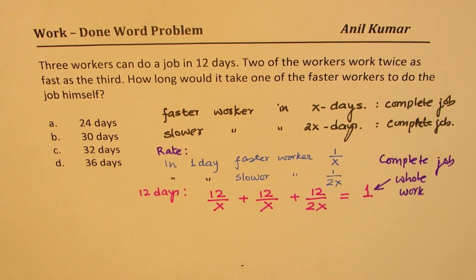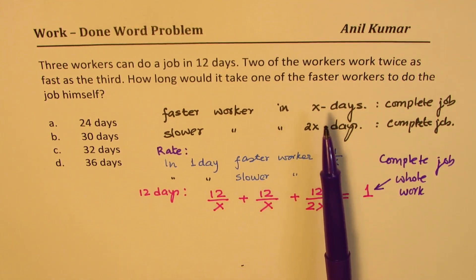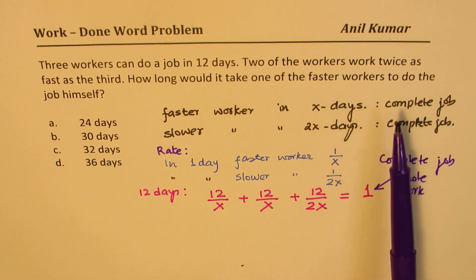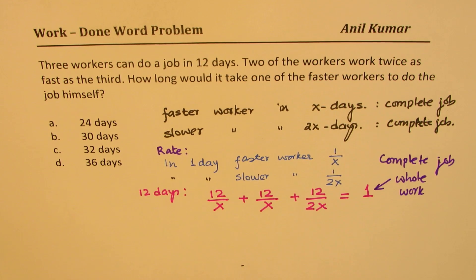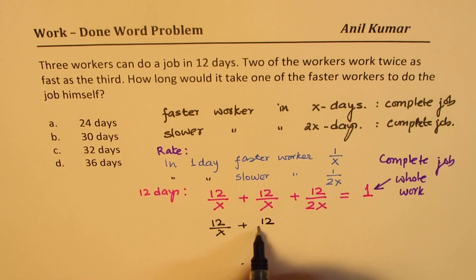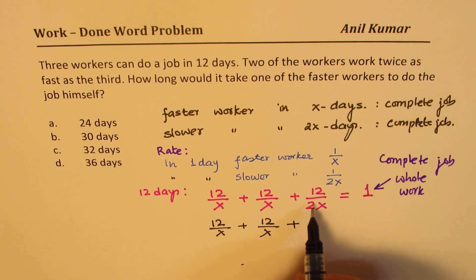Once you know how much time each takes to complete the job, if you don't know that just put X and you get your equation. Now it's a matter of solving. We could simplify this. We can add these two and simplify. Let me rewrite: we can write 12/X + 12/X + 6/X = 1.